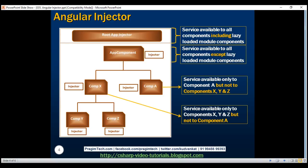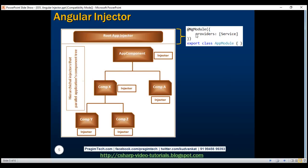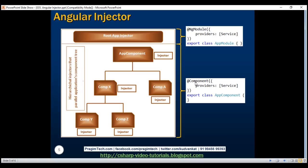Now let's understand how we can register our services for dependency injection with these injectors in Angular. To register our service with the root app injector, just use the providers property of the ngModule decorator. We know every Angular module will have a corresponding class decorated with ngModule decorator. To register your service with an injector at a specific component level, use the providers property of the component decorator. Every Angular component has a corresponding class decorated with the component decorator, so just use its providers property.